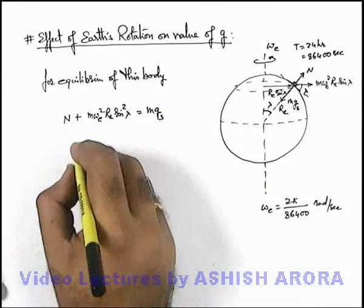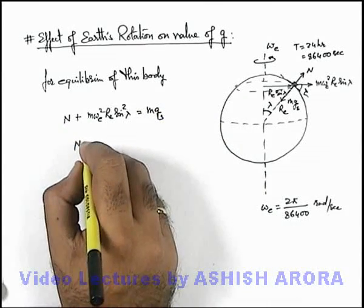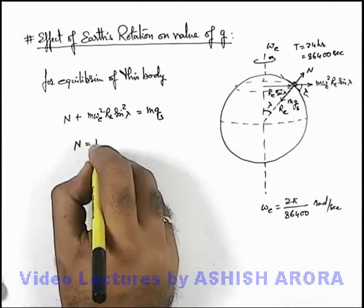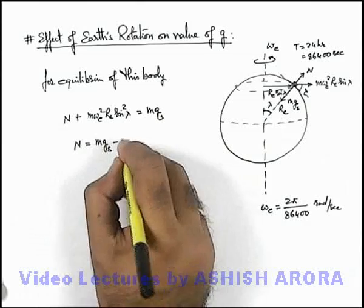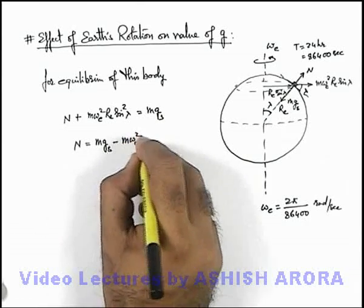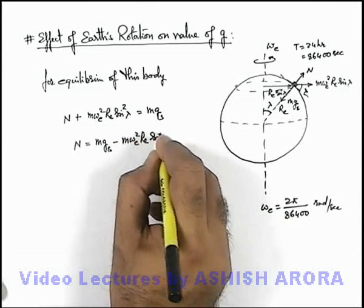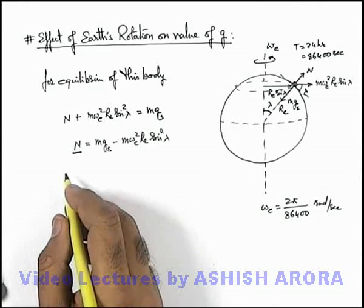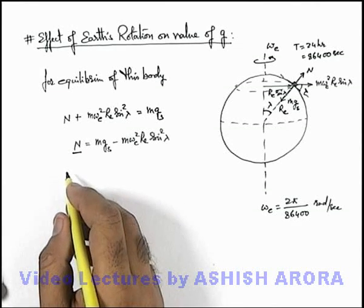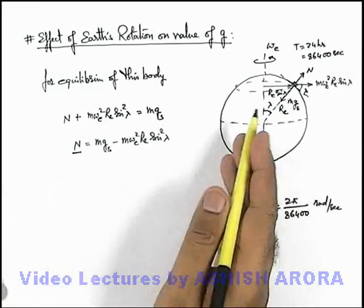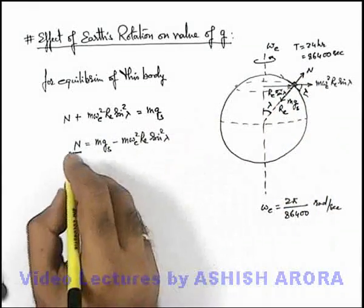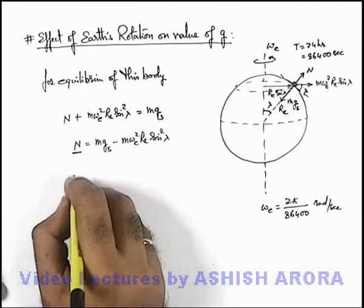Here we can write the contact force applied between Earth and body. This can be written as m g_s minus m ω_e² r_e sin² λ. And this contact force can be written as effective weight of body at this location, because this is a net force with which the body is pressing the Earth.